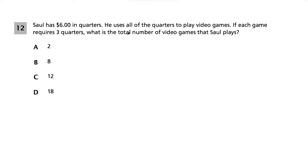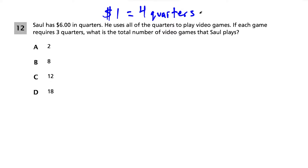Question 12. Saul has $6 in quarters and uses them all to play video games. Each game requires 3 quarters. First, find how many quarters Saul has: $1 equals 4 quarters, so 6 × 4 = 24 quarters.